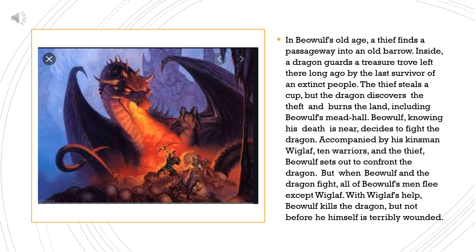In Beowulf's old age, a thief finds a passageway into an old barrow. Inside, the dragon guards a treasure trove left there long ago by the last survivor of an extinct people. The thief steals a cup, but the dragon discovers the theft and burns the land, including Beowulf's mid-hall. Beowulf, knowing his death is near, decides to fight the dragon. Accompanied by his kinsman Wigglop, ten warriors, and the thief, Beowulf sets out to confront the dragon.